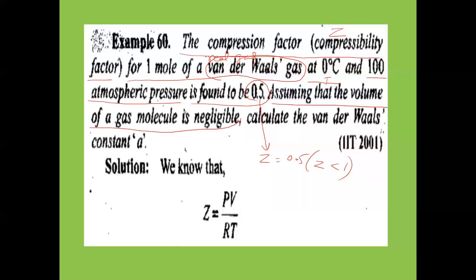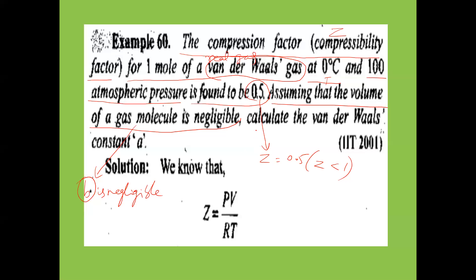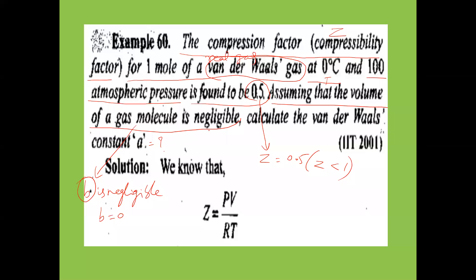Assuming that the volume of a gas molecule is negligible, meaning the Van der Waals constant b is negligible, b can be neglected. We have to calculate the Van der Waals constant a. Wherever b appears, take it as zero, and we need to find a.